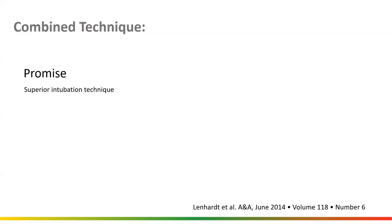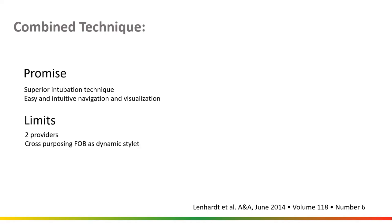Combined technique — looking at stage one and stage two: higher first pass rates, less traumatic for the patient, faster, and both techniques were rated as easier by the operators. The promise: it's a literature-proven superior intubation technique. The science is in. It is easy and intuitive to navigate and visualize — both the visualization component and tracheal access component have been updated and evolved. Limits: two providers required, cross-purposing fiber optic bronchs as dynamic stylets, fiber optic bronchs are expensive and not immediately available, and again, we don't know when we're going to get into trouble until we're already in it most of the time.